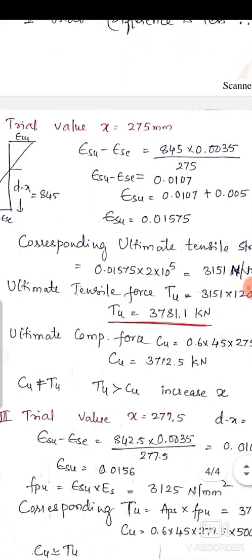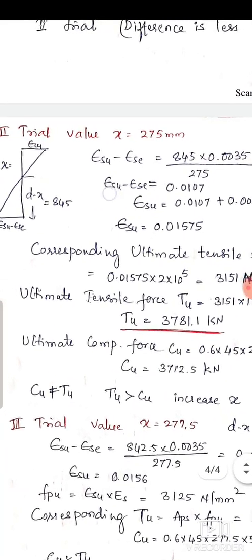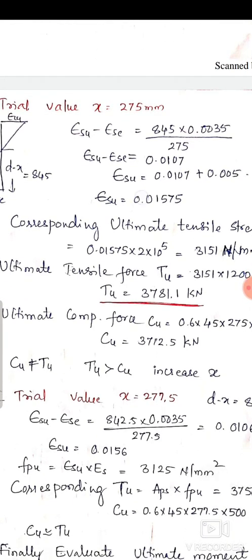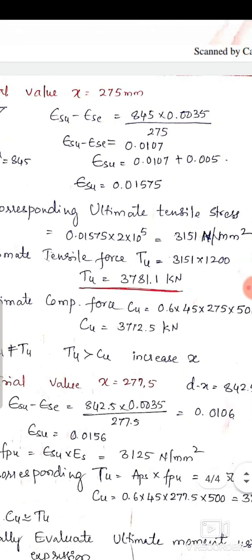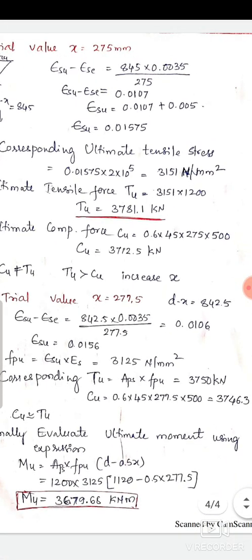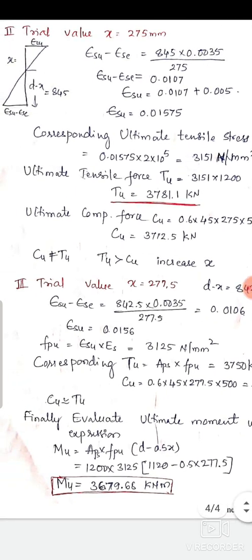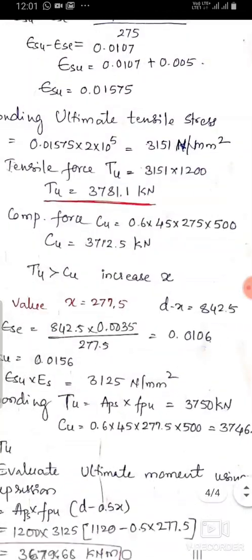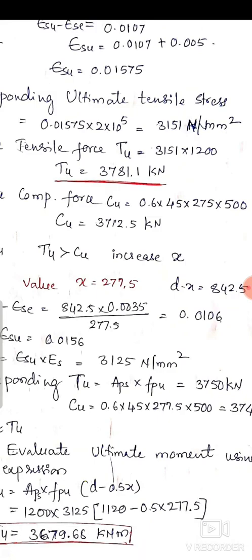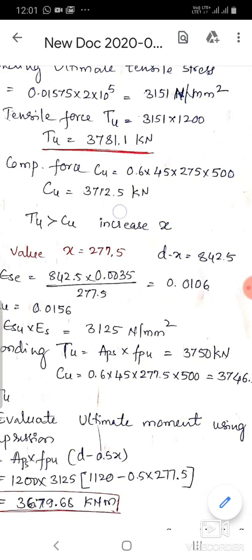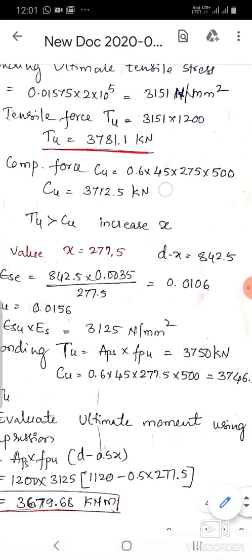Repeating steps 2 to 4 for Trial 2 with x = 275 mm: from the strain diagram, ε_su − ε_se = 0.0107, so the ultimate tensile strain ε_su = 0.01575. The ultimate tensile stress f_pu = 3151 N/mm². T_u = 3151 × 1200 = 3,781.1 kN. C_u = 0.6 × 45 × 275 × 500 = 3,712.5 kN.